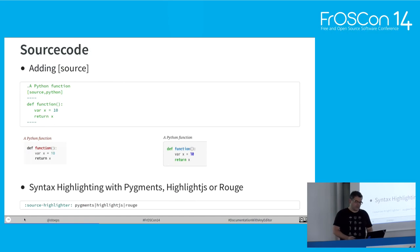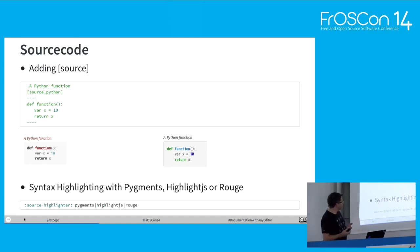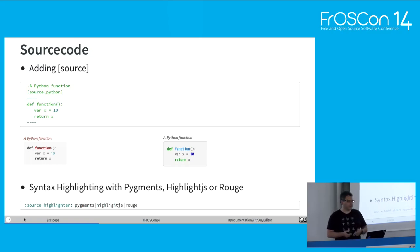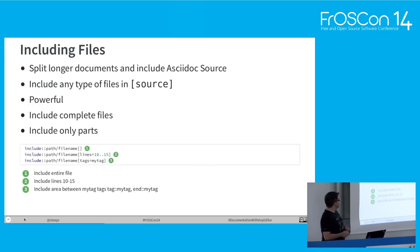One of the most used features when I write documentation is including source code. Just writing down the source code does syntax highlighting. The highlighting depends on three tools: you can use Highlight.js, Rouge, or Pygments — it works in HTML and PDF. You can include files or just write down the code. Normally I include the file, but sometimes for smaller functions it's easier just to write the code directly.